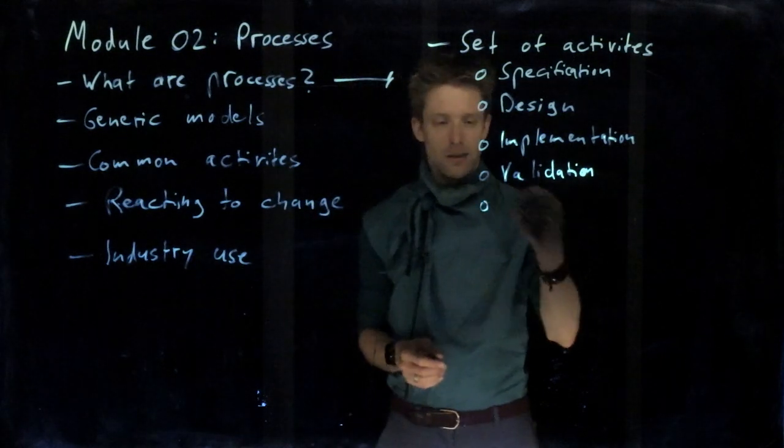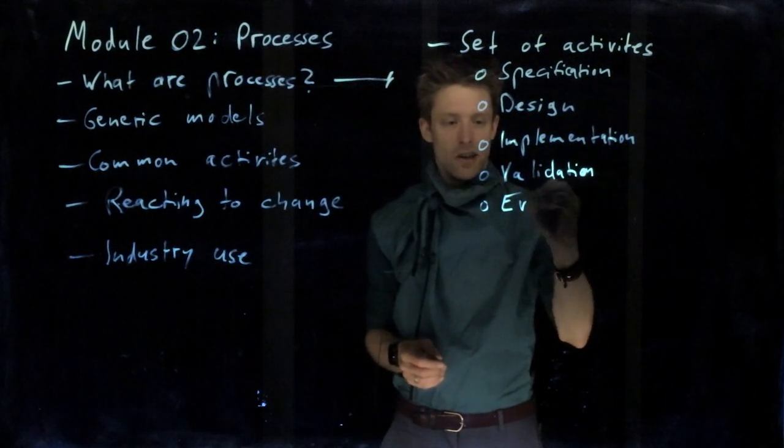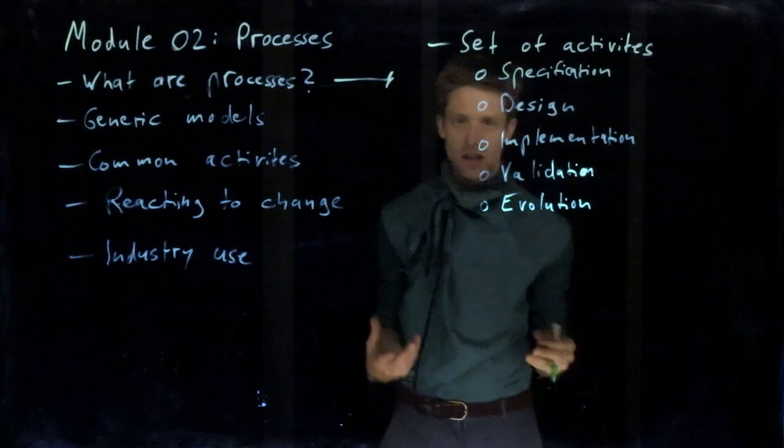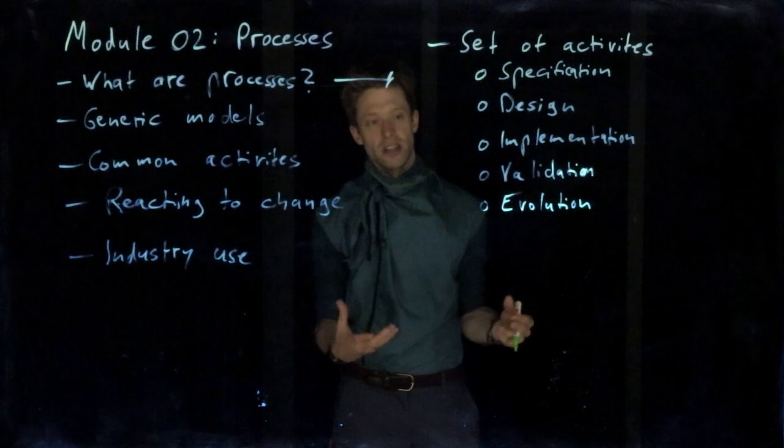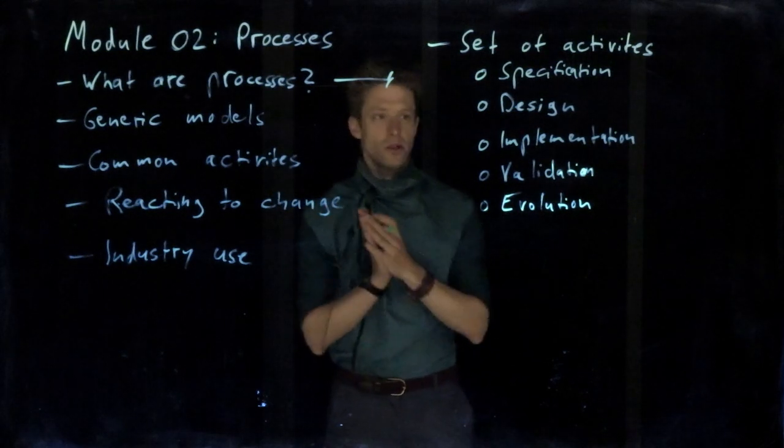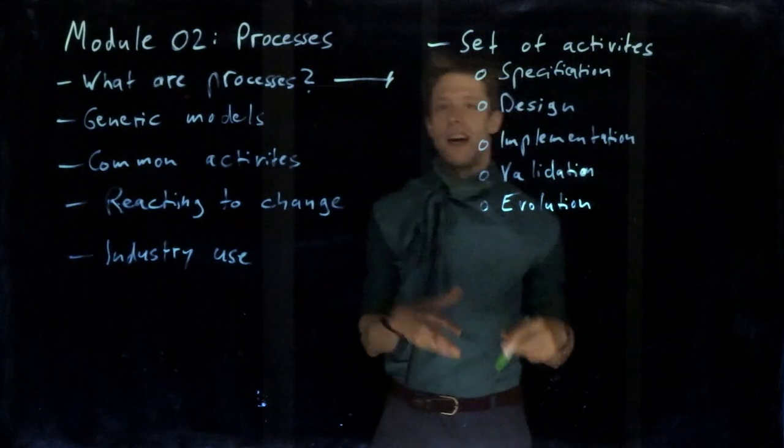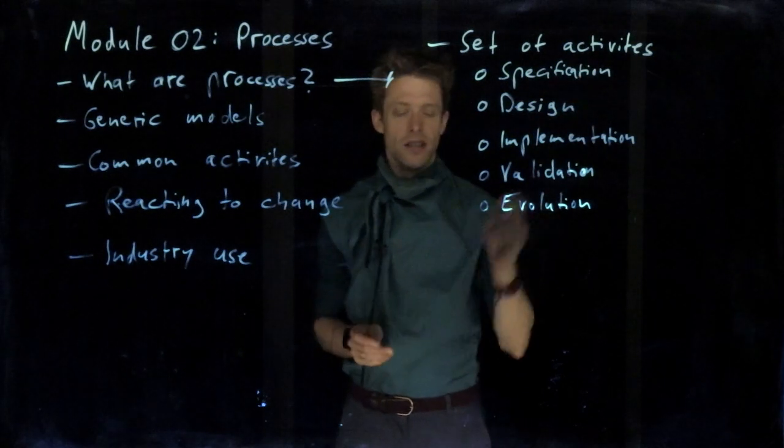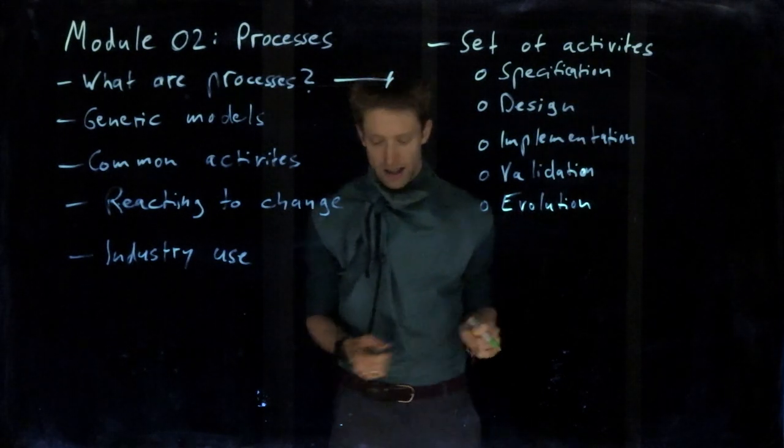And then no system is complete. There is always some kind of evolution. So things change, bugs might be discovered that we have to fix, new stakeholders, new users are added and we need new requirements, for example. So systems evolve over time.